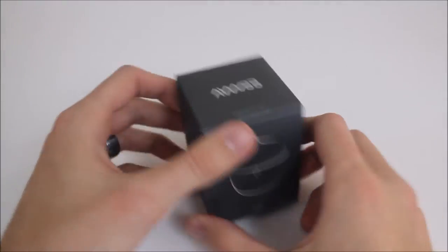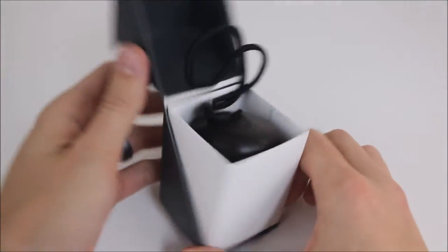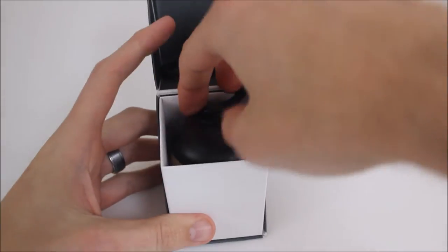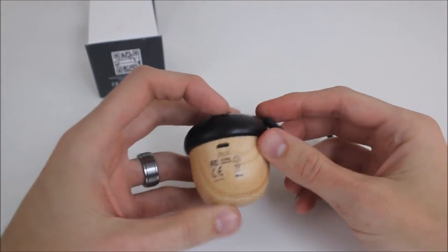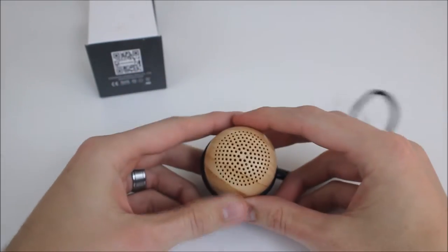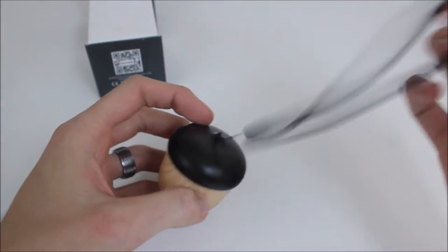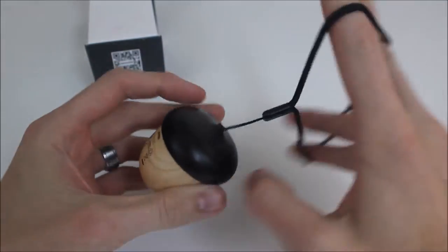So the Avwu MiniNut speaker, as we open it here, is exactly that—it is a mini nut. It's made to look like an acorn. It is plastic, it's not wood, and then you have the speaker here in the bottom. It has a little lanyard here so that you can carry that around on your wrist.